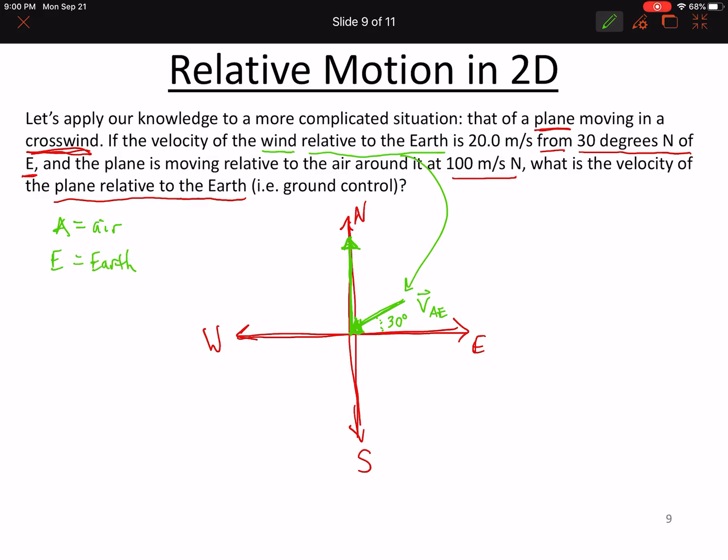The other thing we know is that the plane is moving relative to the air at 100 meters per second north. So V plane relative to air. Remember, the relative to thing comes second in the subscripts. So we'll add that to our list - P is the plane. And we already have the air one in there. So we've got all of our subscripts.